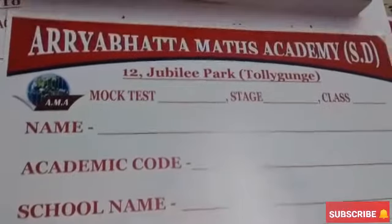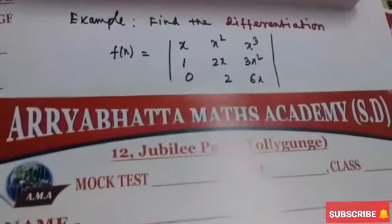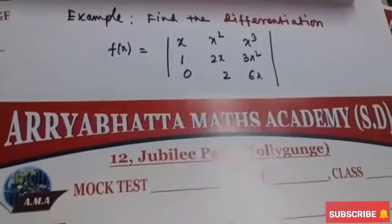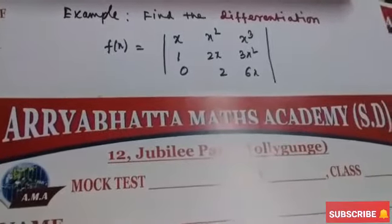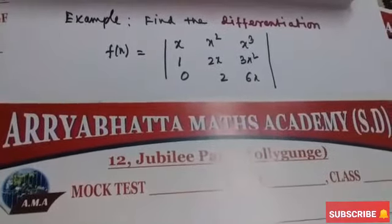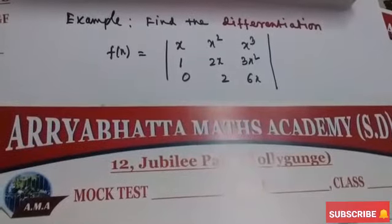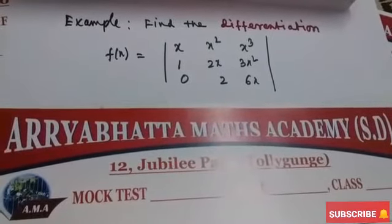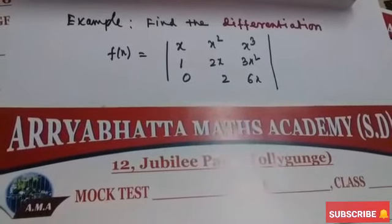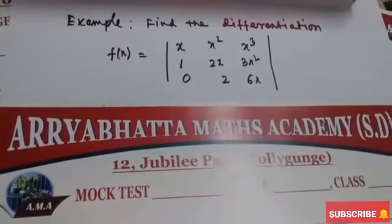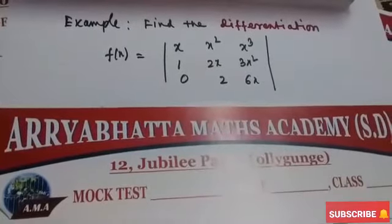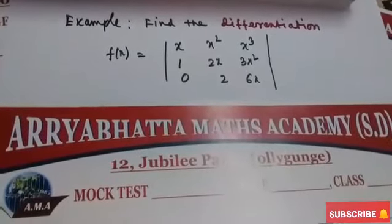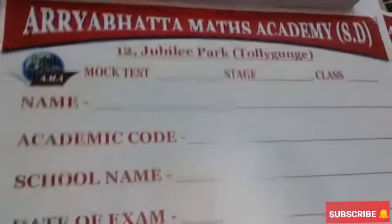Now we close our class by discussing an example. Find the differentiation of f(x), where the determinant has first row x, x², x³; second row 1, 2x, 3x²; and third row 0, 2, 6x.